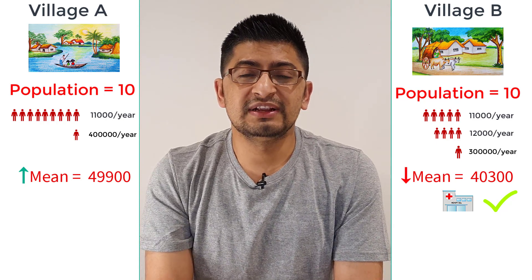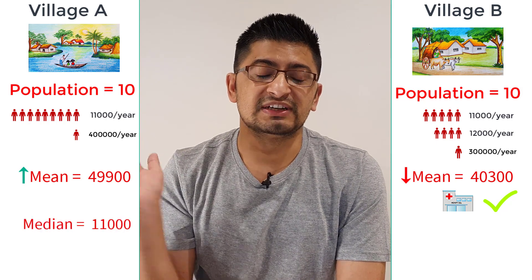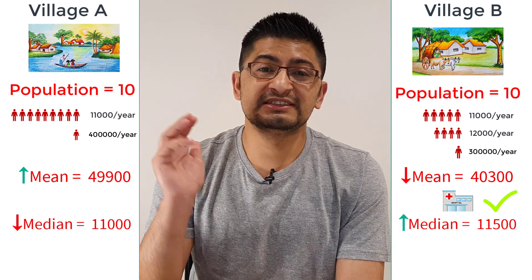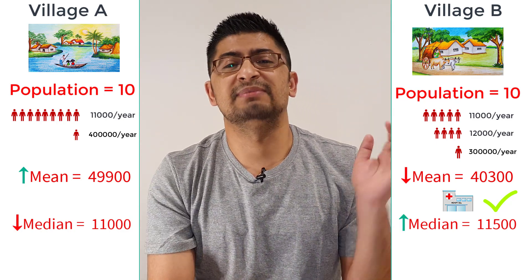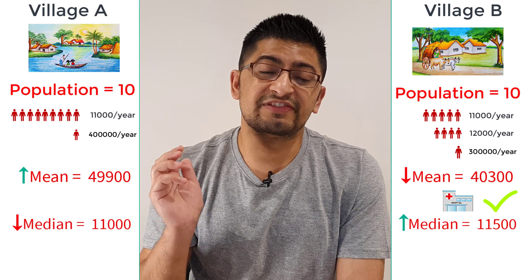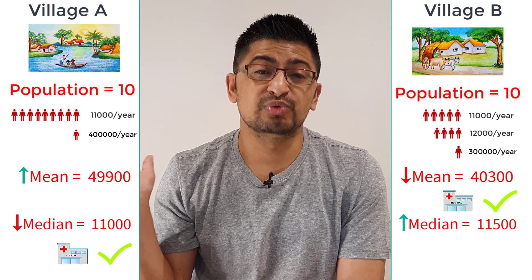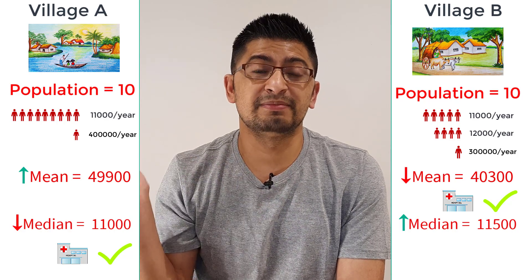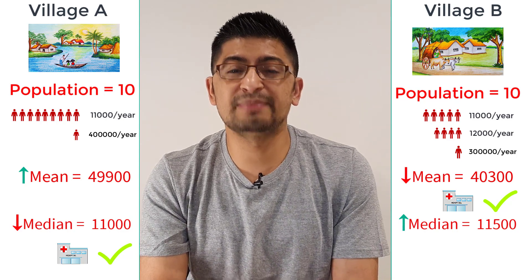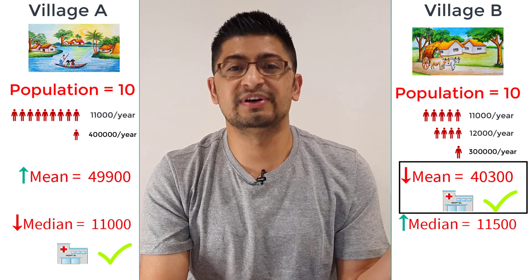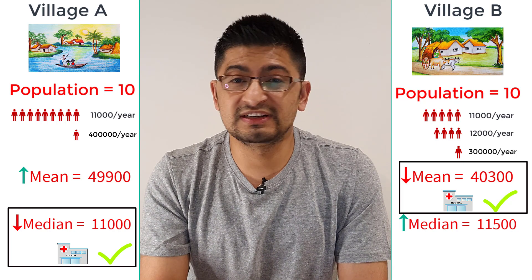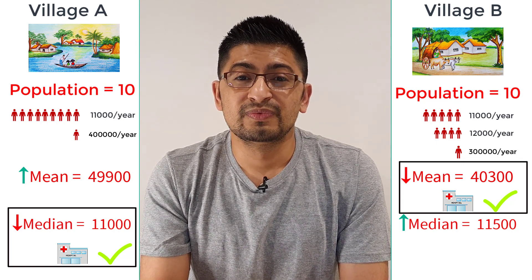Now looking at the median: the median of Village A is $11,000 whereas the median of Village B is $11,500. That means Village A has a lower economic status than Village B. So if you go with the median, you would build the free hospital in Village A. In summary, using the mean leads you to choose Village B, while using the median leads you to choose Village A.